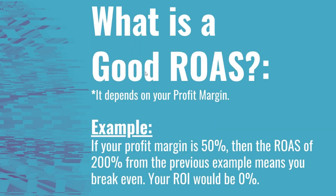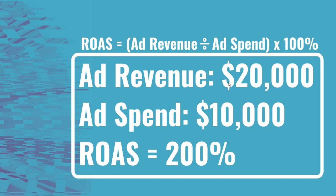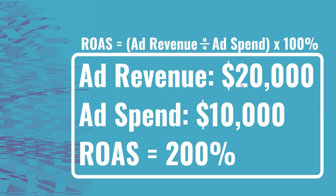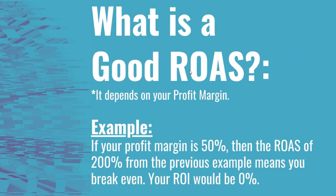One of the questions you might have is: what is a good ROAS? It really depends on your profit margin. In the previous example — $20,000 in revenue, $10,000 in spend — if my profit margin is 50%, then my profit is $10,000 because 50% goes to additional costs for my business. In that case, my return on investment would again be 0%. When you're looking at ROAS, you're really just looking at your advertising spend, so a good ROAS also needs to account for your other costs.